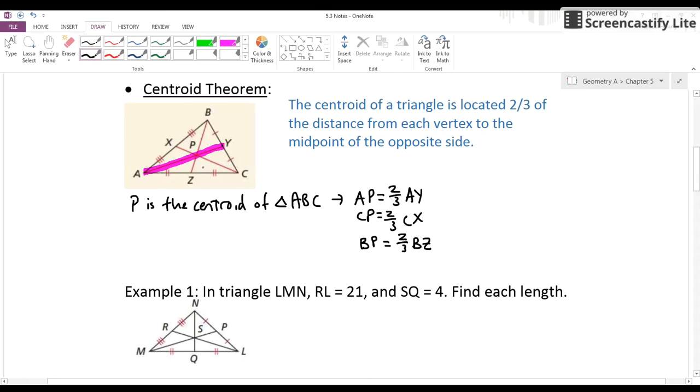Now, related to that, you can also say PZ is one-third of BZ. Use that segment addition postulate idea, two-thirds and one-thirds to make one whole. And sometimes that's handy in a problem.